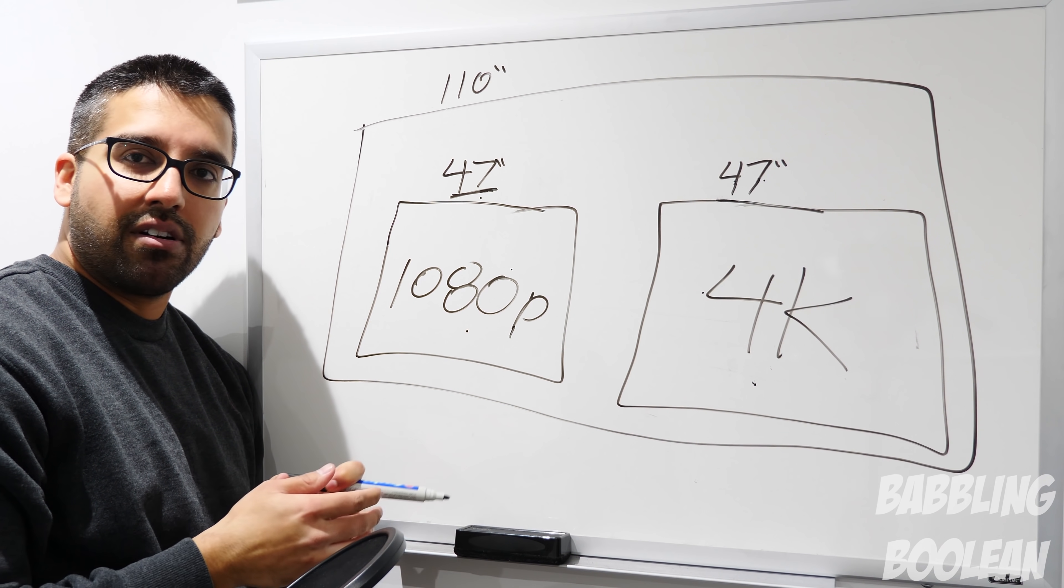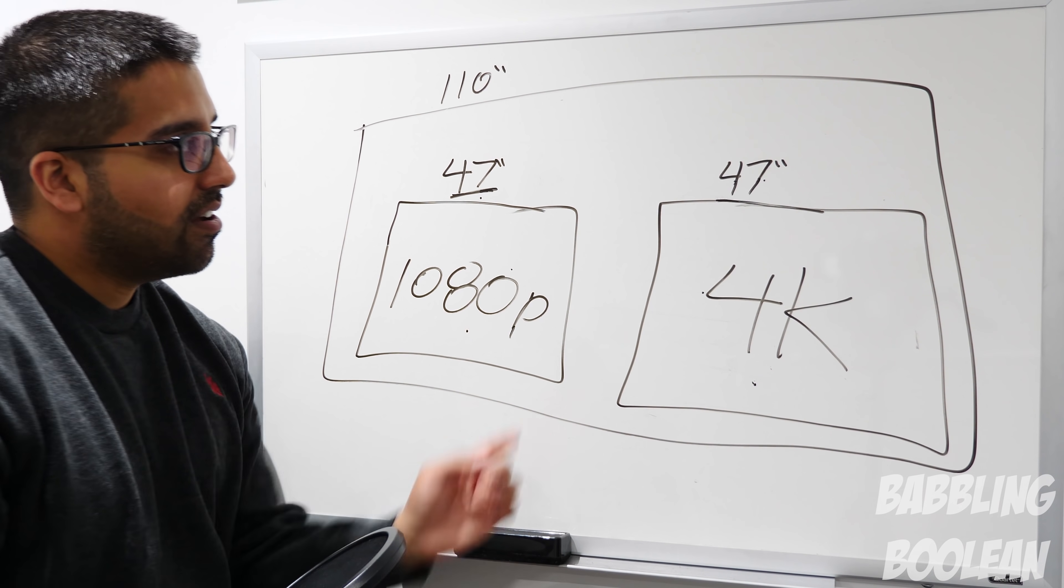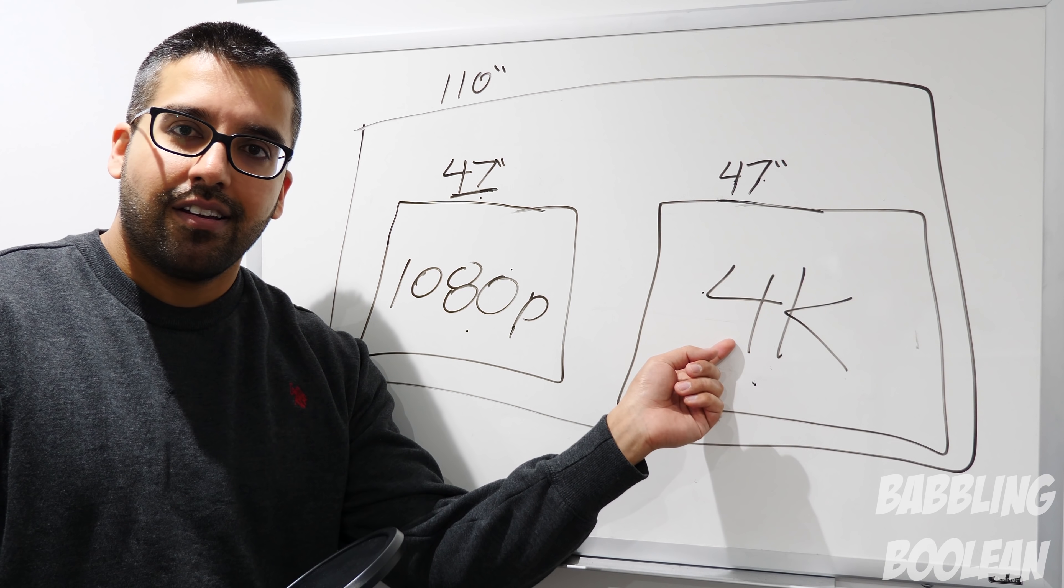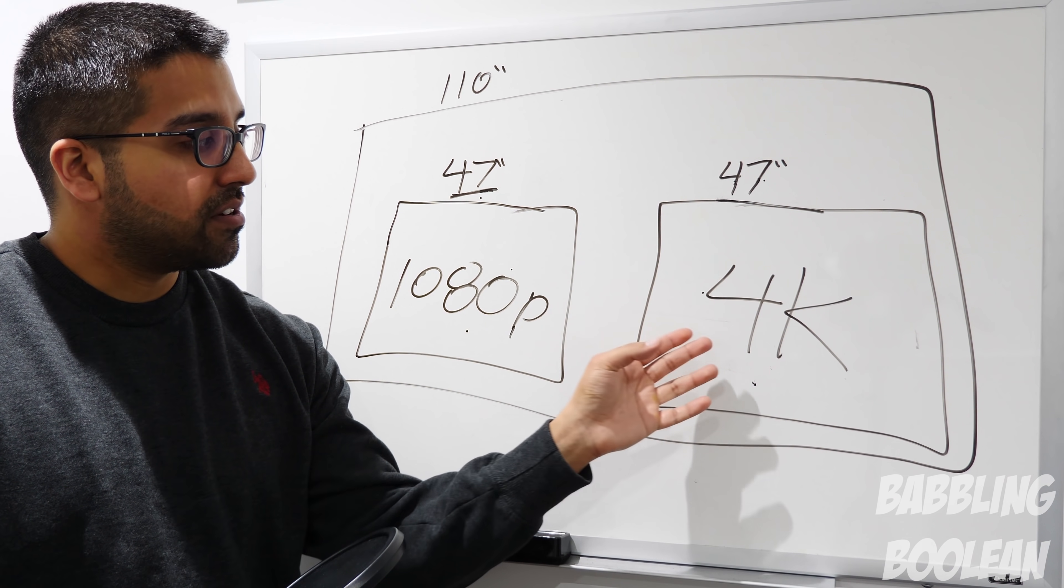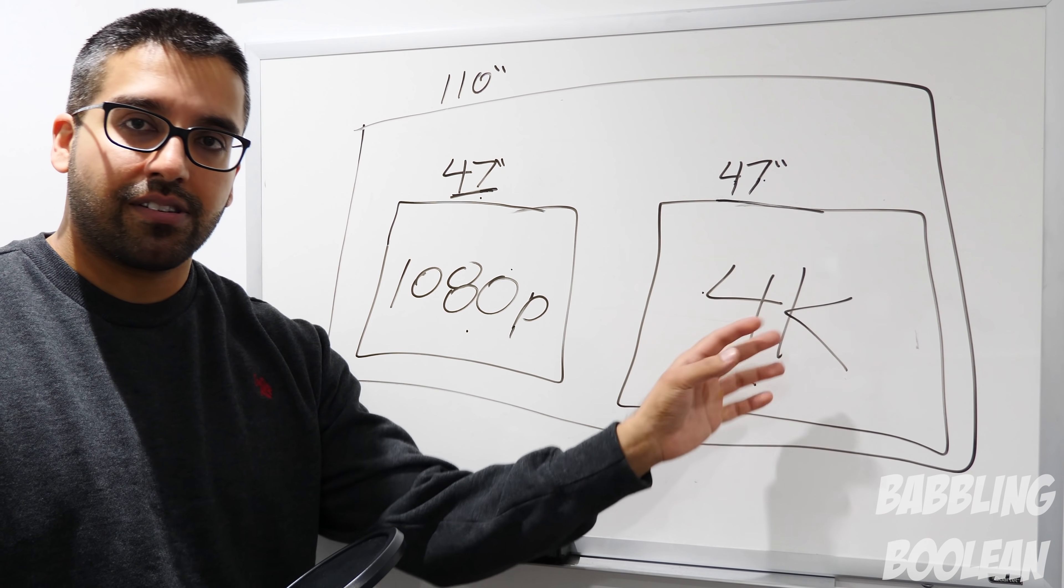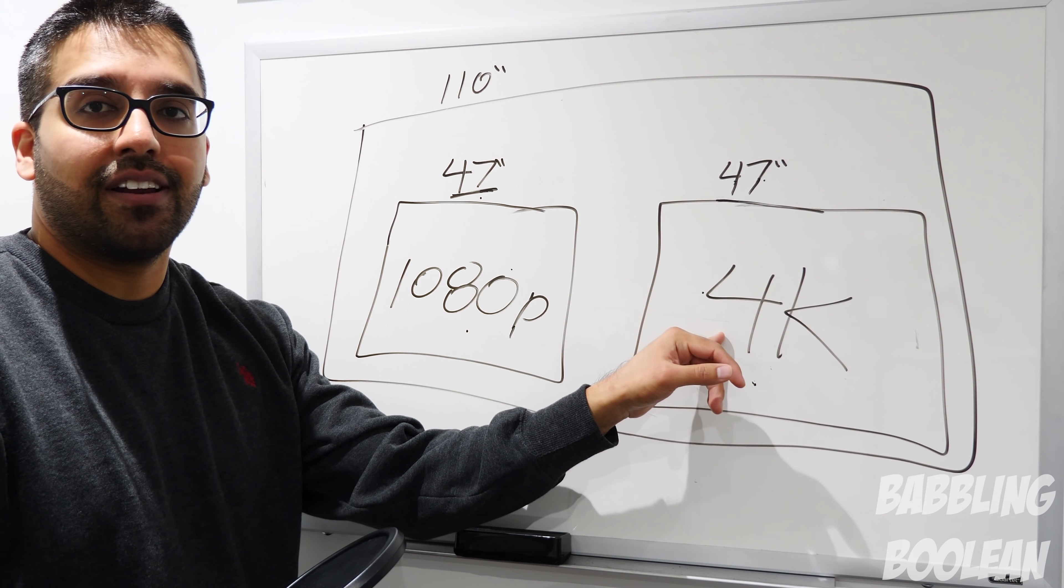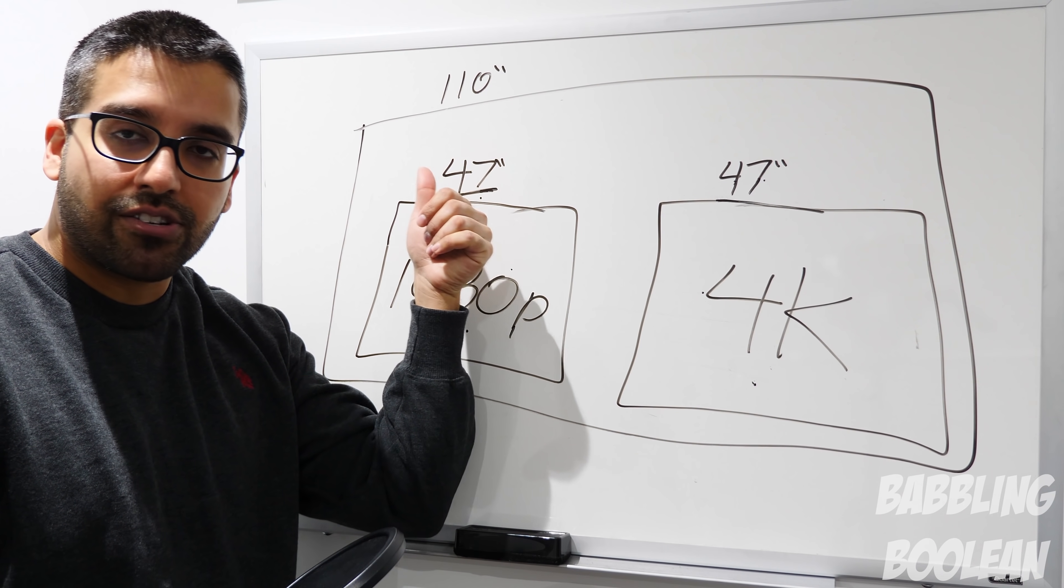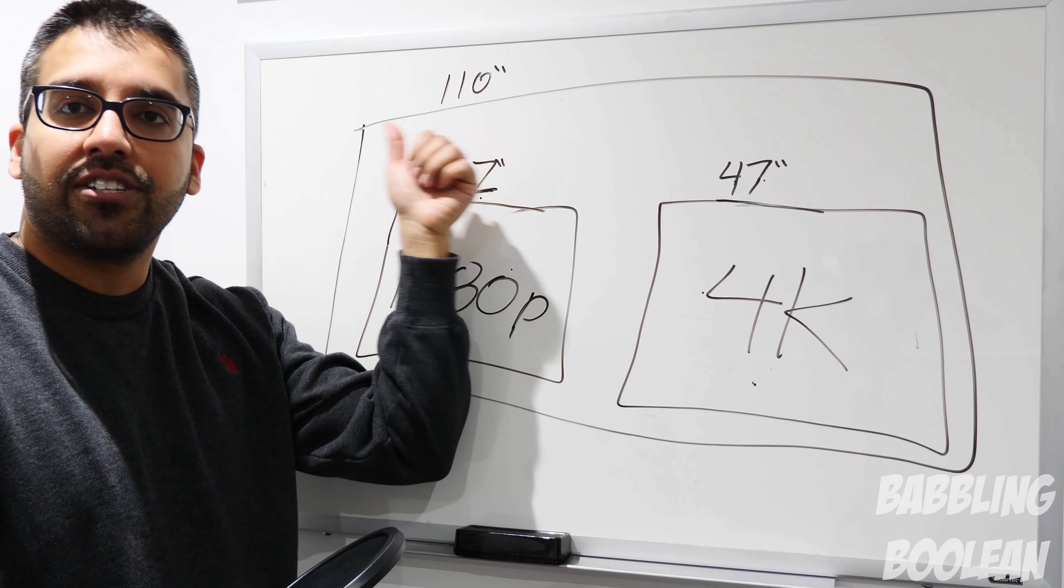Now a 4K 110 inch projector will look much better because you're stretching all those additional millions of pixels across a wider area. So that's where 4K will shine on, like, say, a 110 inch projector screen. But again, the amount of pixels going from 47 inch to 110 inch, it always stays the same resolution. Never changes on screen size. Very important thing to know.